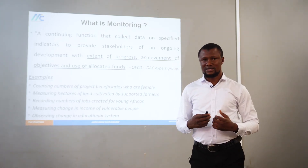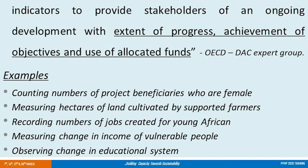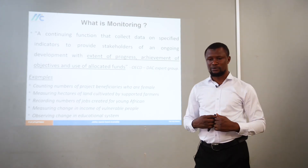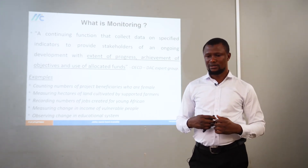Let's consider some examples of monitoring. Counting the number of project beneficiaries who are female — this monitors against key performance indicators of female beneficiaries, providing information on both the number of beneficiaries and the gender sensitivity of the project. Also: measuring hectares of land cultivated by supported farmers, recording the number of jobs created for young Africans, measuring change in income of vulnerable people, and observing change in the educational system.